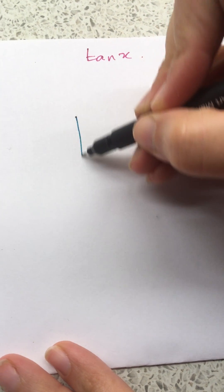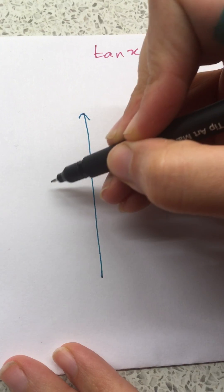To draw the graph of tan x, I'll begin by drawing the x-axis and the y-axis.